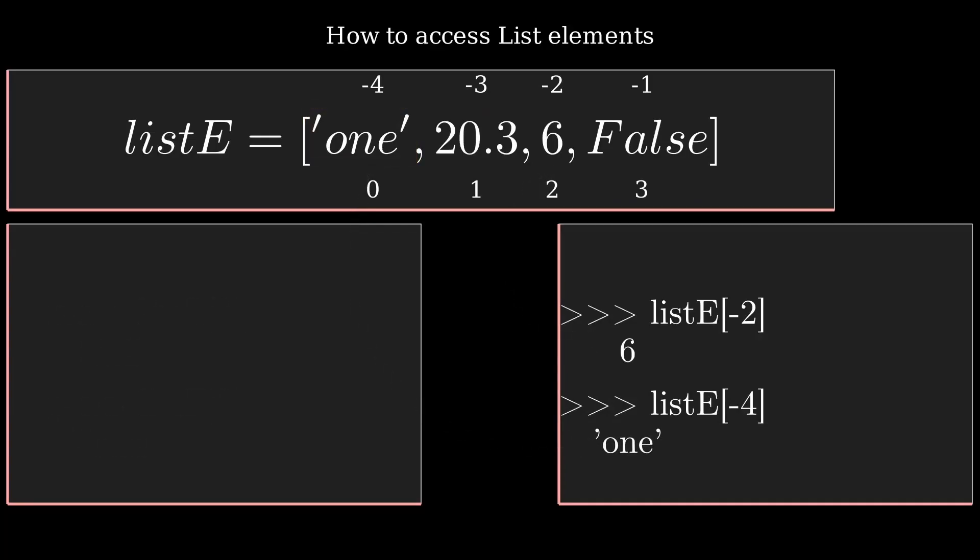If you want to fetch more than one element from the listE variable, you can use the slicing method, represented by square brackets with start colon end index. If you pass listE[1:3], it will give you elements from index one and two, with three excluded.